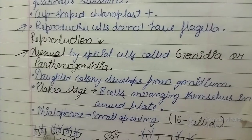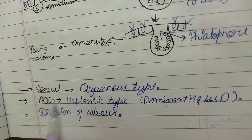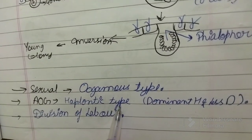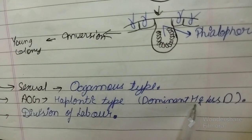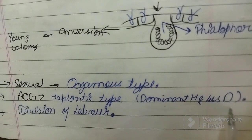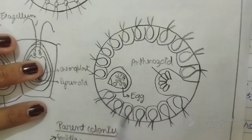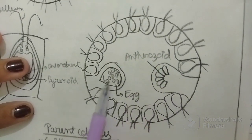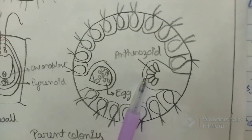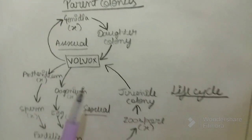So that was about asexual reproduction in Volvox. Talking about sexual reproduction: it is of the oogamous type. Alternation of generation is of the haplontic type, meaning the dominant phase is haploid and the diploid phase is the lesser one. You can see the oogamous type of reproduction here — these are your eggs, these are your antherozoids, and they fuse together to form the daughter colony.